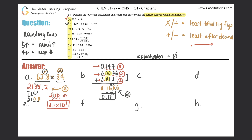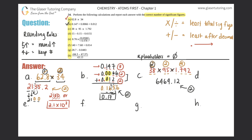Back to multiplication for letter c: 38 times 95 times 1.792. Get the full answer, then round. 38 times 95 times 1.792 gives 6469.12. In multiplication it's the least total sig figs. For 38: two. For 95: two. For 1.792: four. The least total is two, so this answer should be rounded to two sig figs.